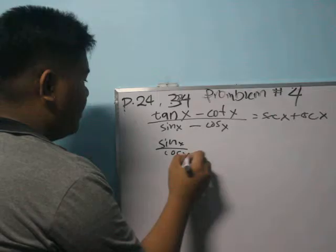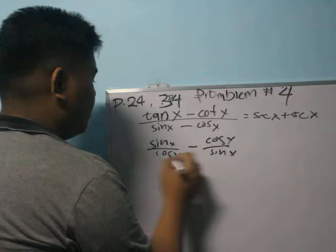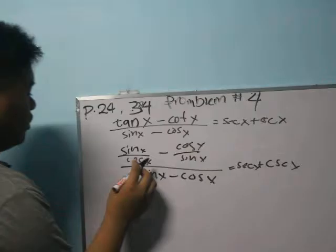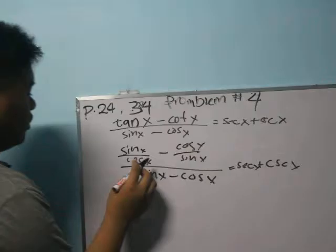tan is equal to sin x over cos x minus cot is equal to cos over sin all over sin x minus cos x is equal to sec plus csc x. So to add this, to add both of this...